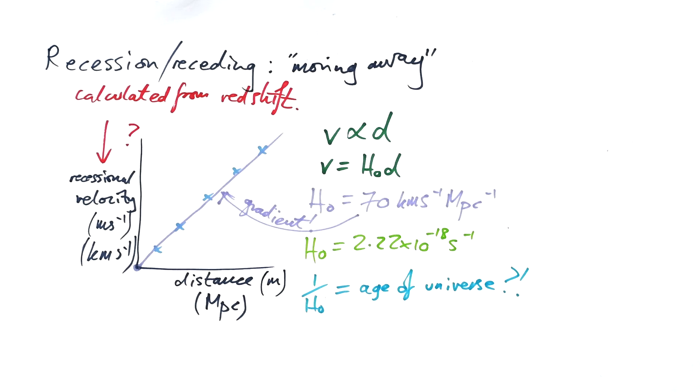But the big question is, how do we calculate the relative velocity between a source of a wave and the observer using the Doppler effect? Let's have a look.